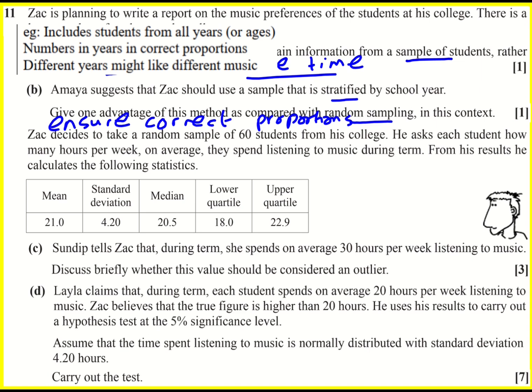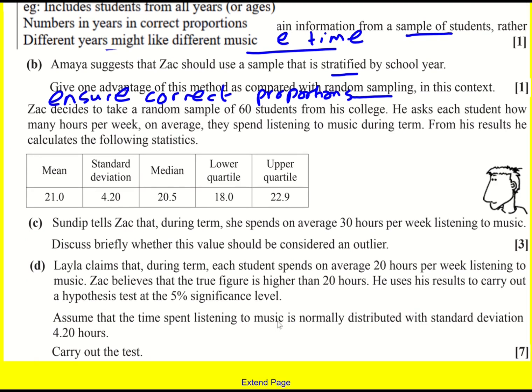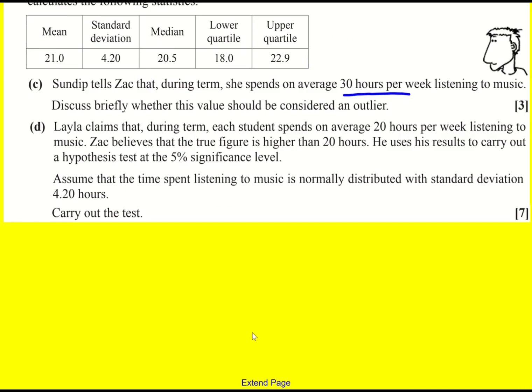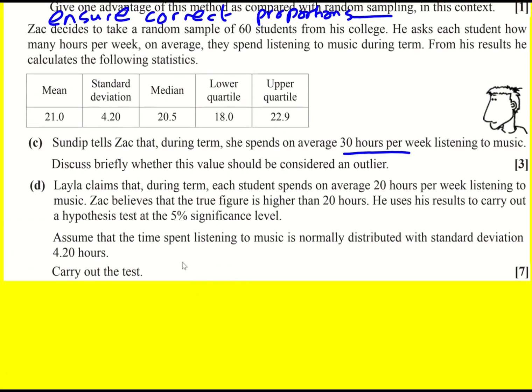Zach decides to take a random sample of 60 students. He asks each student how many hours per week on average they spend listening to music during the term, and then he calculates some statistics as shown. Sandeep tells Zach that during term time she spends on average 30 hours per week listening to music. Should this be considered an outlier? This is a really interesting question, actually slightly different to the norm.